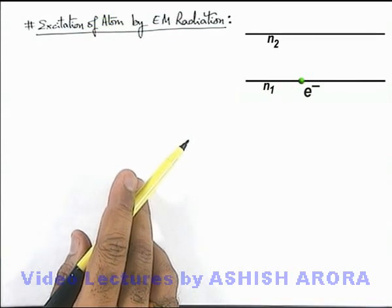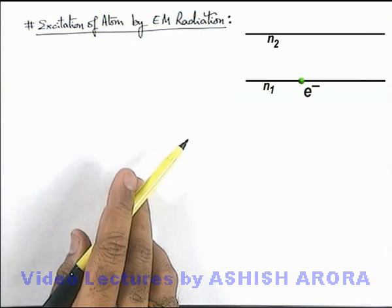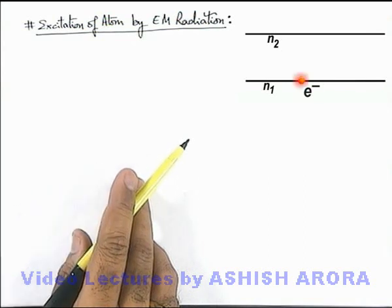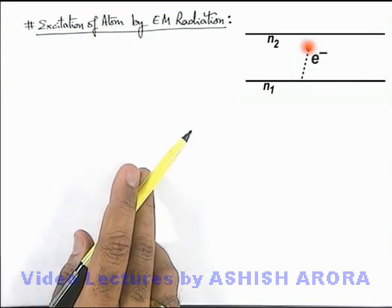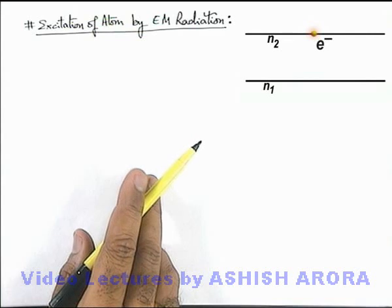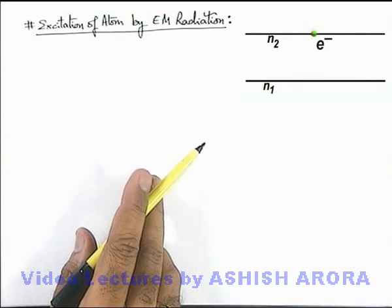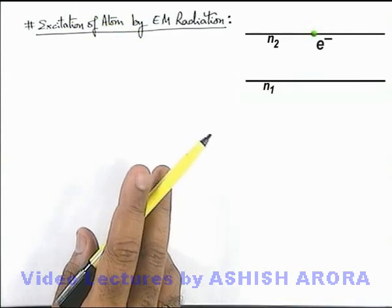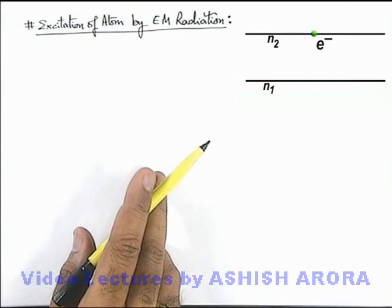And say if this photon is absorbed by the electron, its energy increases and it makes a transition to the higher energy level. This is the similar phenomena which we have studied in Bohr's third postulate also. And this phenomena of transition of electron from lower level to the higher level we call excitation of the atom.